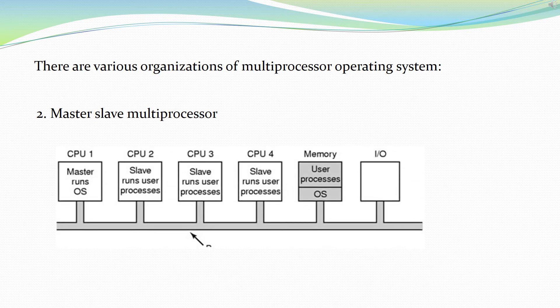Another organization is the master-slave multiprocessor. In this model, there is a single data structure which keeps track of the ready processes. One CPU works as the master and other CPUs work as slaves. All processors are handled by the single master processor. The master runs the operating system processes and the slave servers run the user processes. Memory and input/output devices are shared among all processors and connected via a common bus. This system is simple and reduces data sharing, and is called asymmetric multiprocessing.